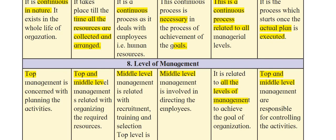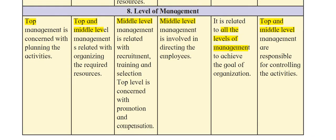The eighth point is level of management. Under planning, top management is concerned with planning activities — they are the brains behind the activities to be conducted. For organizing, it is top and middle level management, as they interact to arrange resources and group activities. Under staffing, middle level management handles recruitment, training, and selection, while top level management is concerned with promotion and compensation.